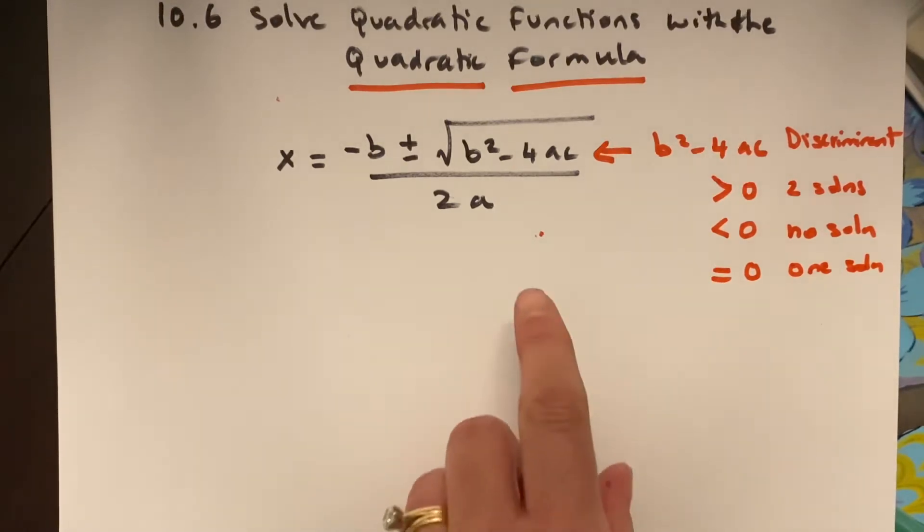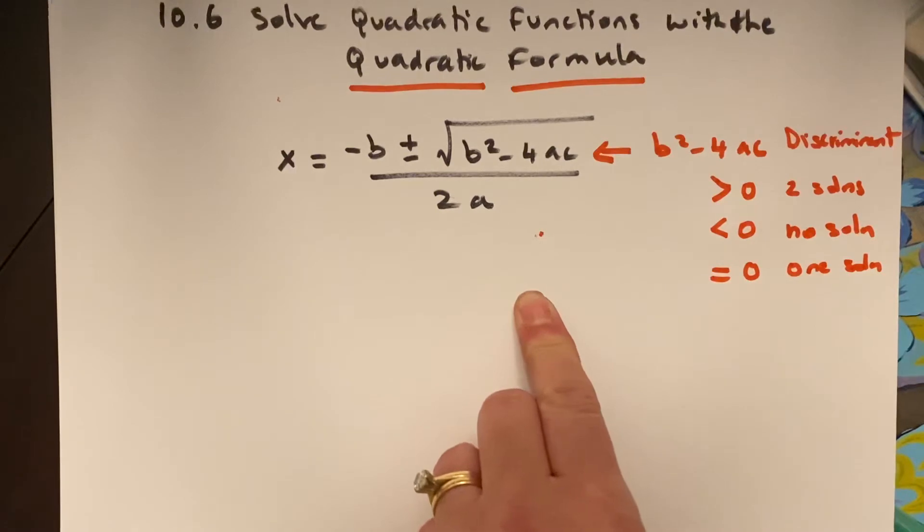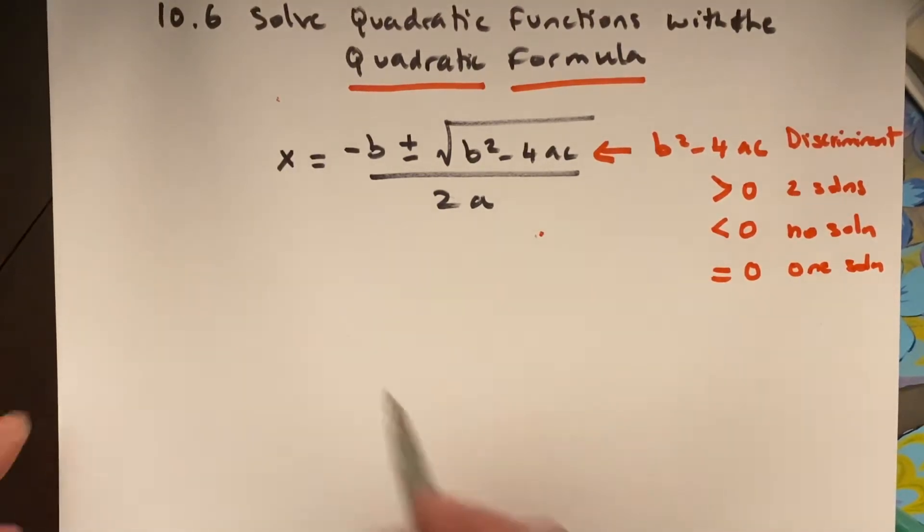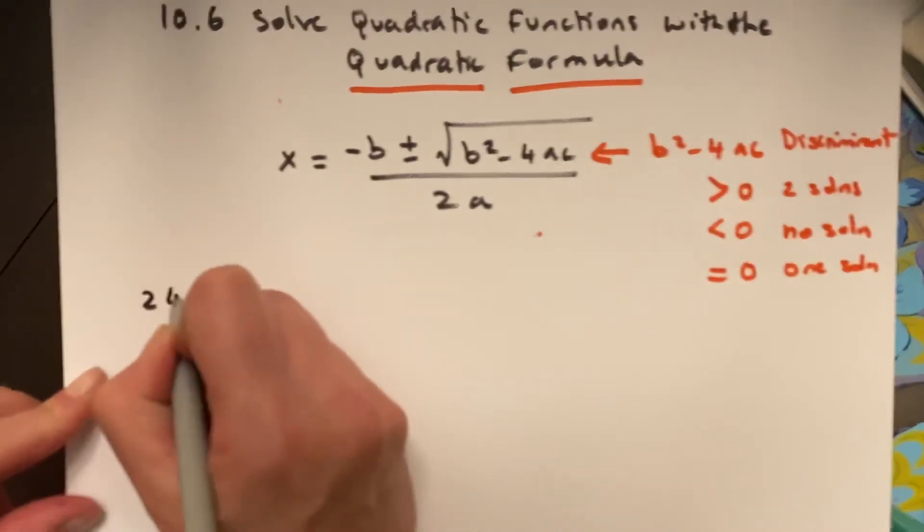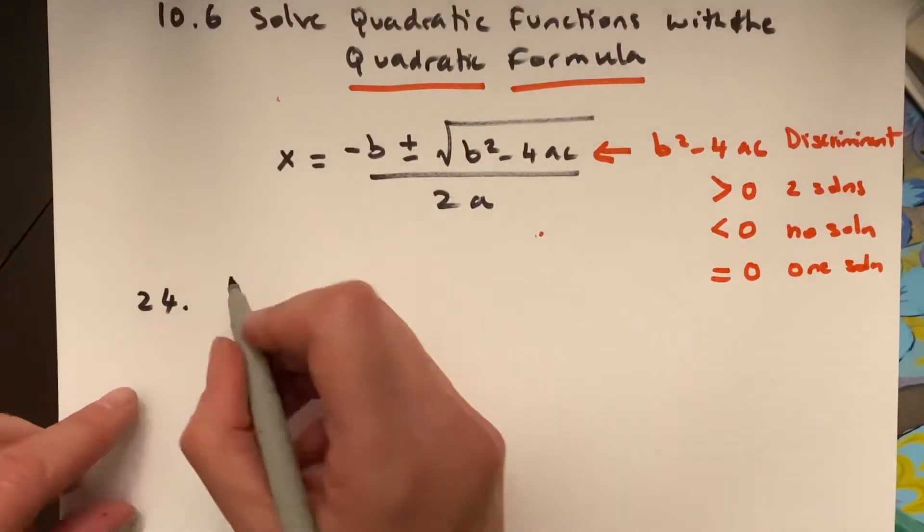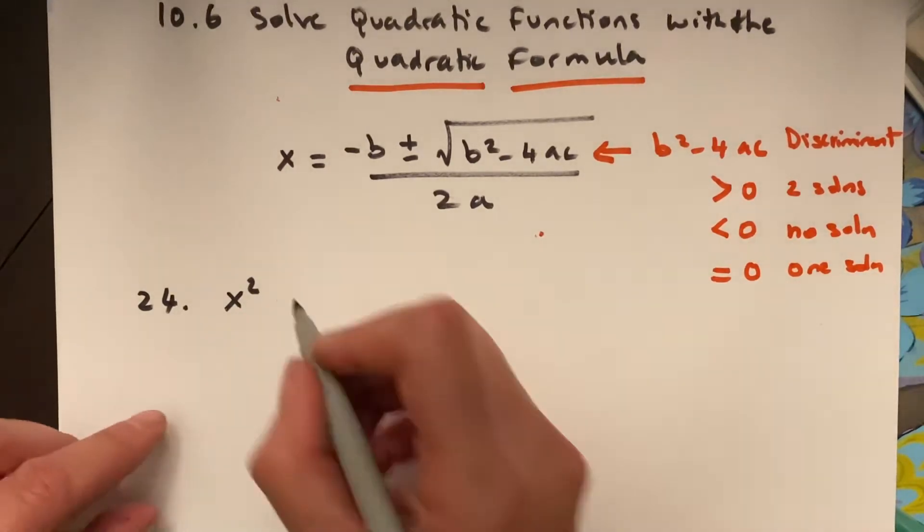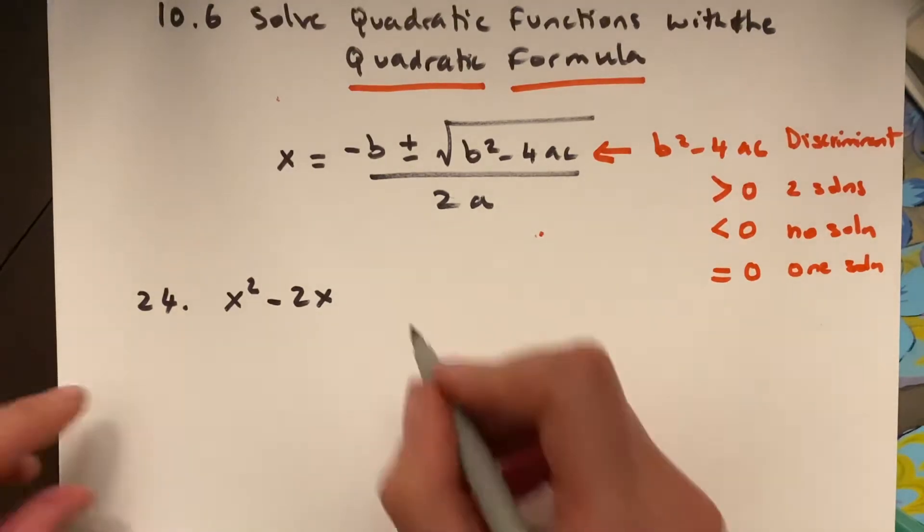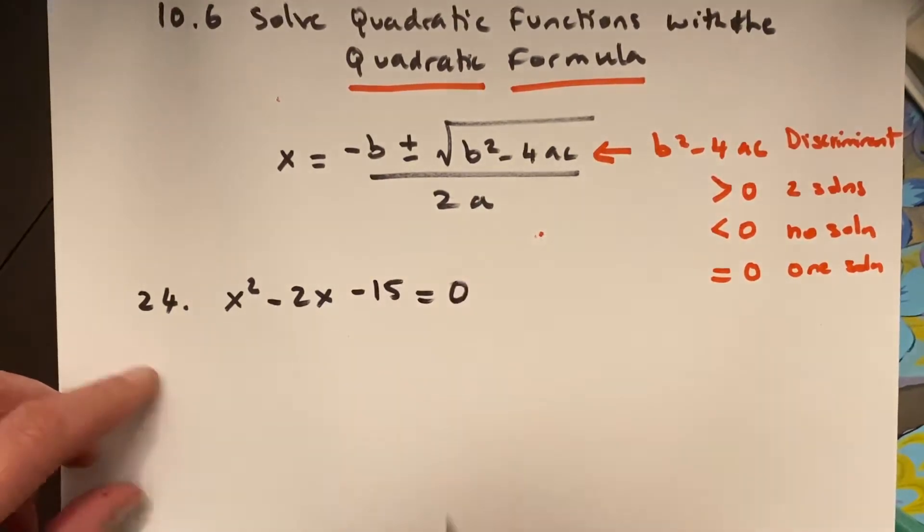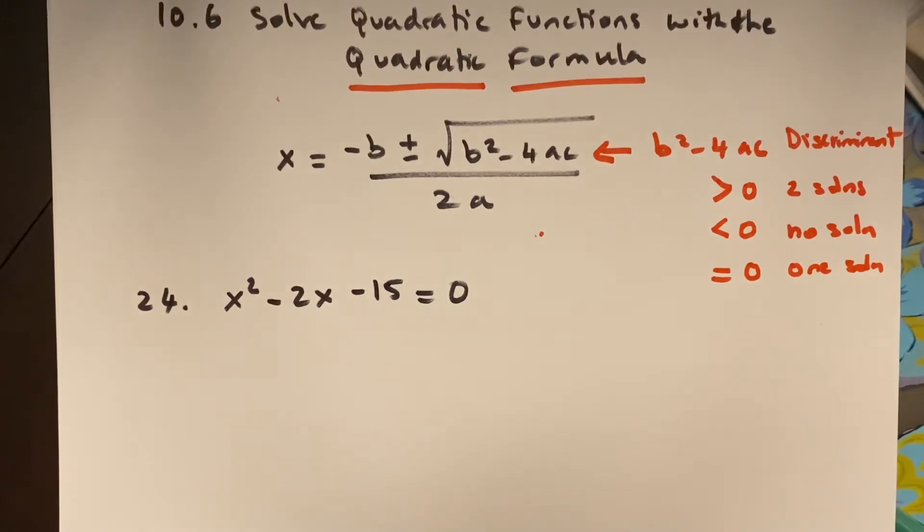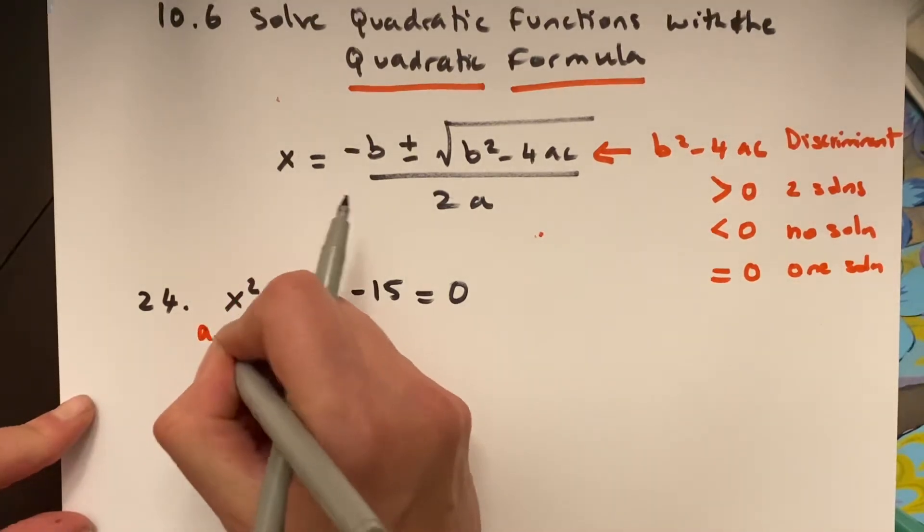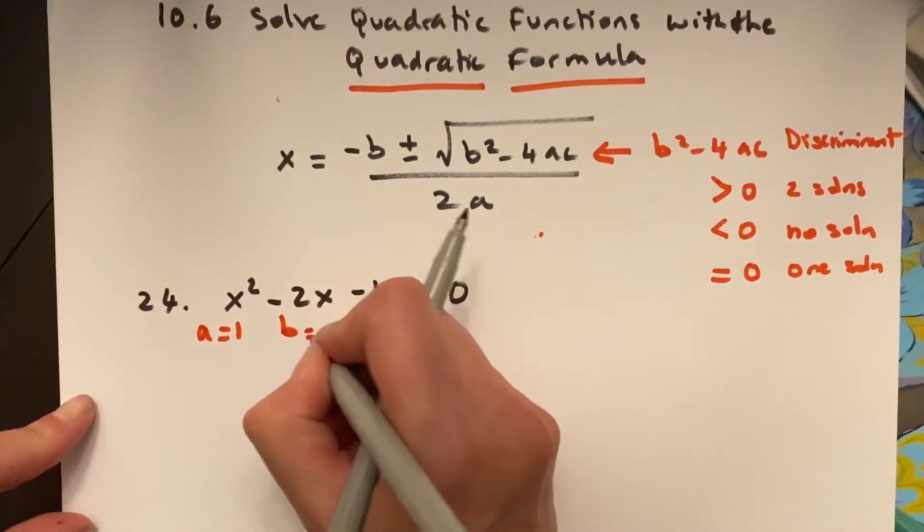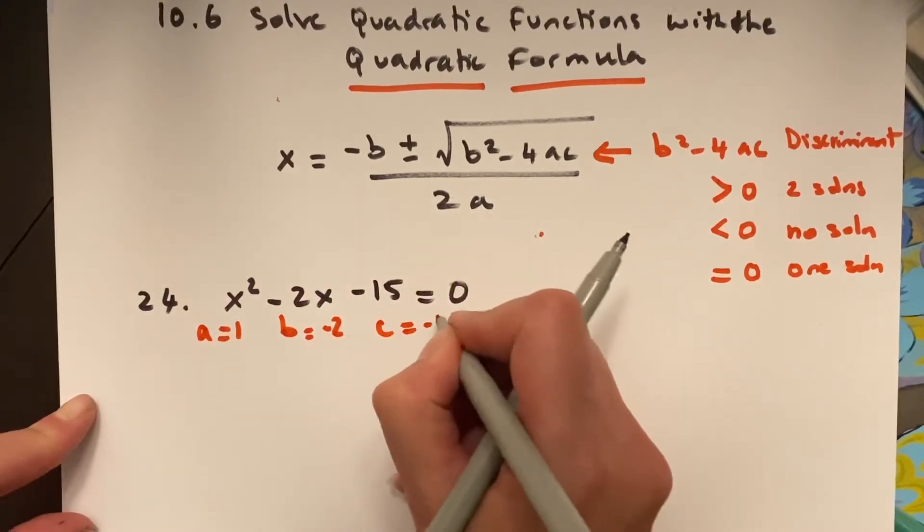So, a quadratic formula, say we have, we'll just jump right into problem number 24. And problem number 24 says, x squared minus 2x minus 15 equals 0. And I'm just going to apply a equals 1, b equals negative 2, c equals negative 15.